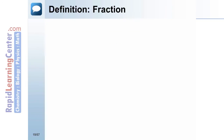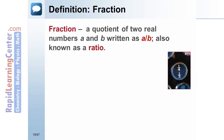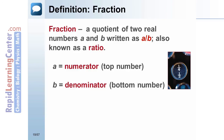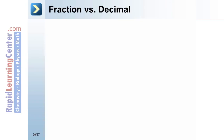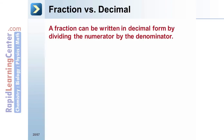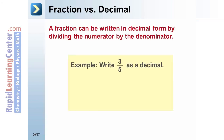A fraction is a quotient of two real numbers a and b, written as a over b. Fractions are also known as ratios. A is the numerator (the top number) and b is the denominator (the bottom number). A fraction can be written as a decimal by dividing the numerator by the denominator. Example: write three-fifths as a decimal — divide 3 by 5 to get 0.6, so three-fifths equals six-tenths.